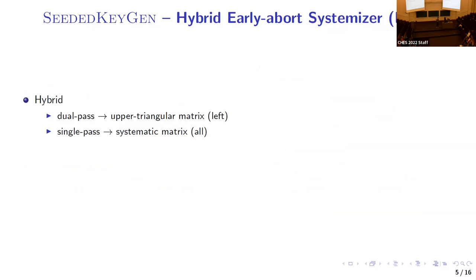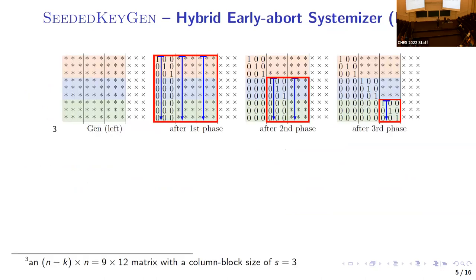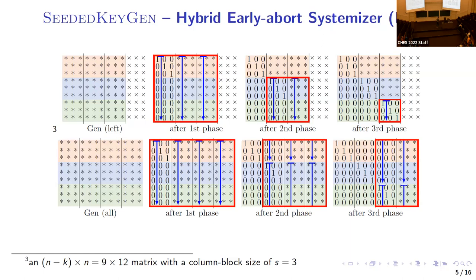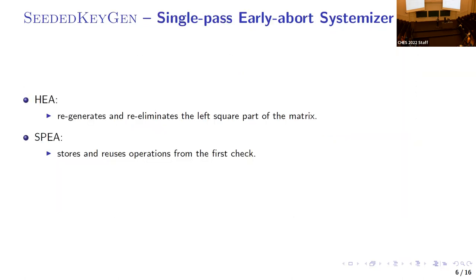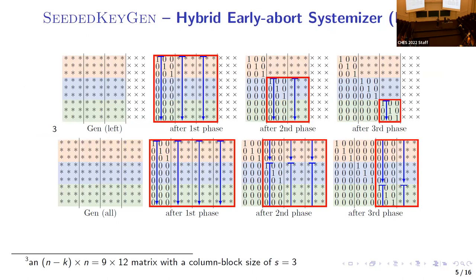The hybrid early-abort (HEA) systemizer combines both approaches. First, only the left square part of the matrix is generated and forward elimination is applied. If all diagonal elements are ones, the entire matrix is regenerated with the same seed and elimination is applied using the single-pass scheme. HEA is fast for failure detection and requires less logic, but must regenerate and re-eliminate the left square part.